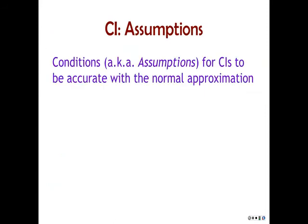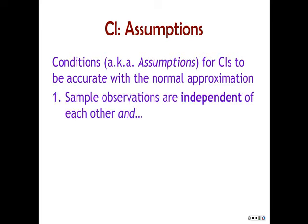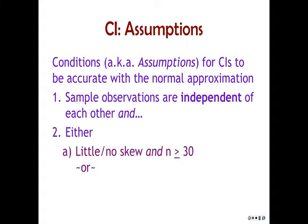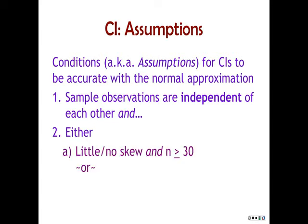So the assumptions for confidence intervals to be accurate using the normal approximation: first, the sample observations need to be independent of each other. Number two, the sampling distribution of means needs to be pretty normal. That can happen a number of ways — either the raw score distribution can have little or no skew, indicating a normal distribution, and also we have a sample size greater than 30, or much greater than 30. The people in this book really don't like confidence intervals with a sample size less than about 30, although it happens in practice. The more normal your sample is, or the more you can reasonably assume that the population is normal, the more likely it is that you have an accurate confidence interval.